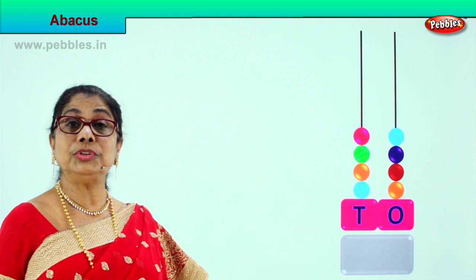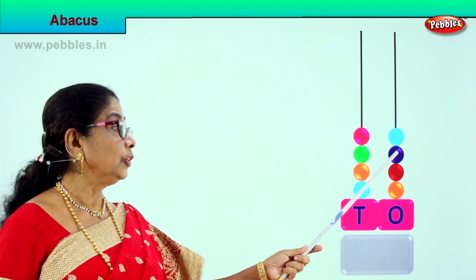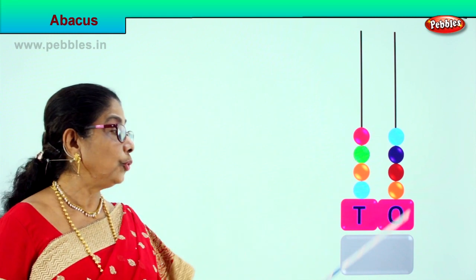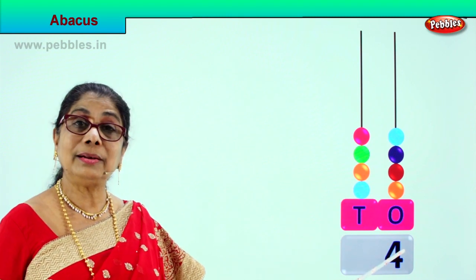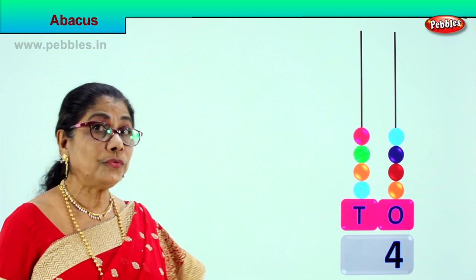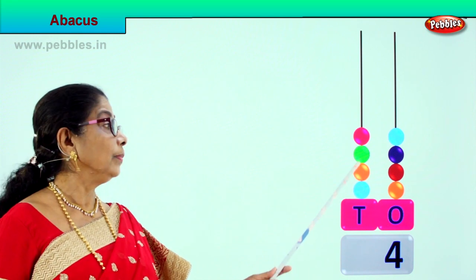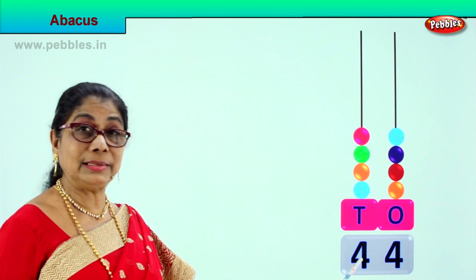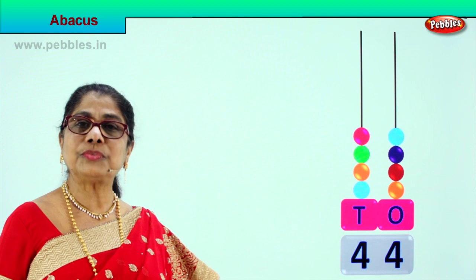We are learning to count using abacus. Let's count the ones place: 1, 2, 3, 4. There are 4 beads on the first rod and we write 4 — that is 4 ones. In the tens place we have 1 ten, 2 tens, 3 tens, 4 tens — there are 4 beads, each worth 10. So we write 4 — 4 tens, 4 ones: 44.